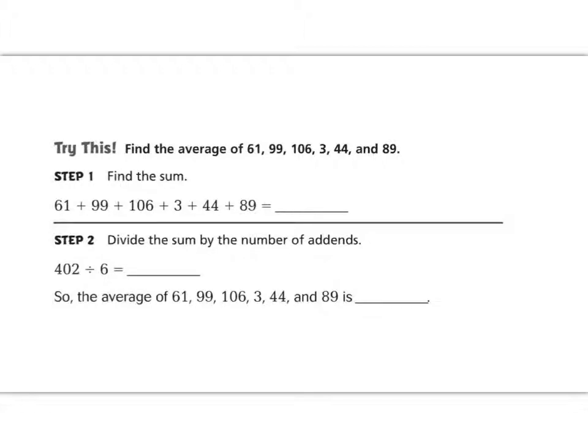Our first step is to find the sum. So let's line them up and add 61, plus 99, plus 106, plus 3, plus 44, and 89. Alright, in our first column, 9 plus 1 is 10, plus 6 is 16, plus 3 is 19.